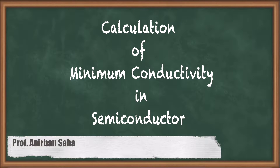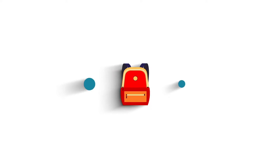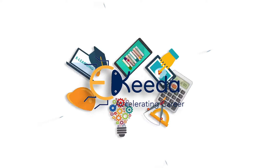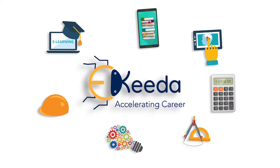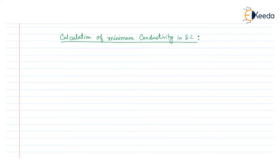Hello friends. In this video we are going to discuss how to calculate the minimum conductivity of a semiconductor. We will consider that our semiconductor material is an intrinsic material. The conductivity term we denote by sigma.